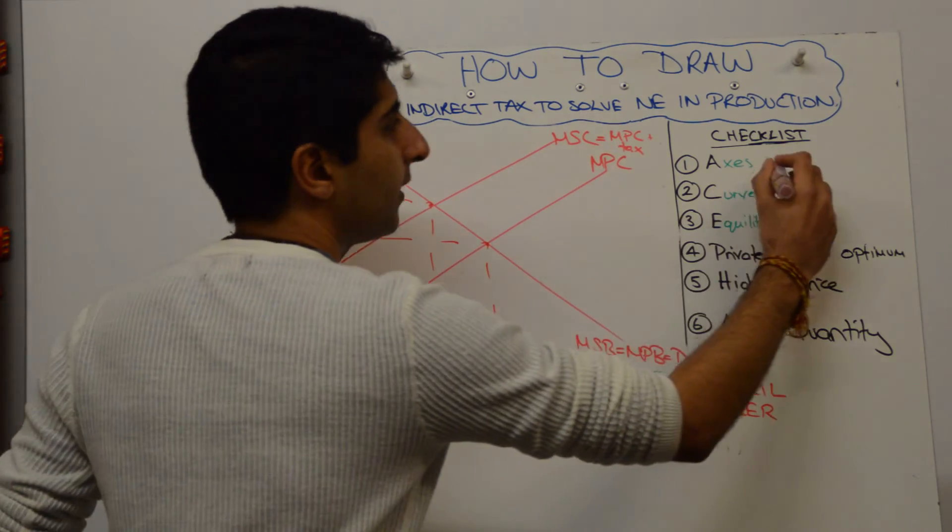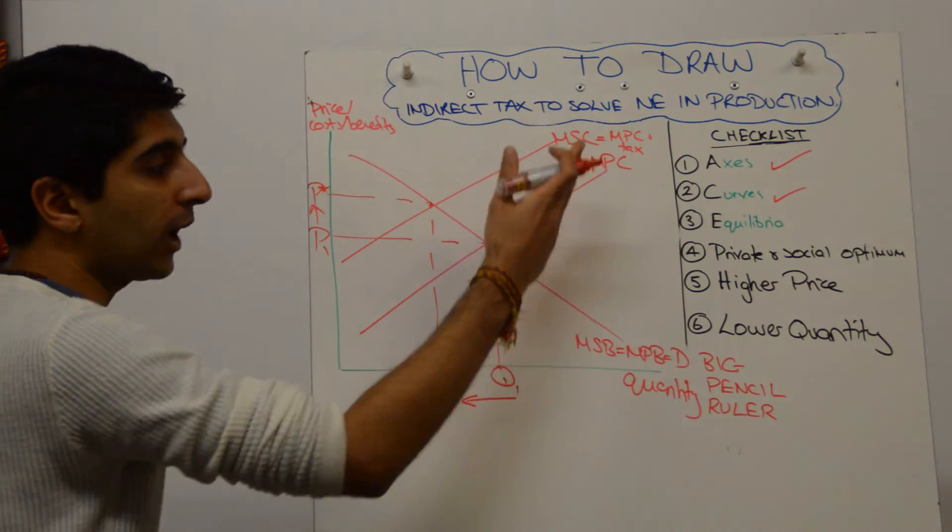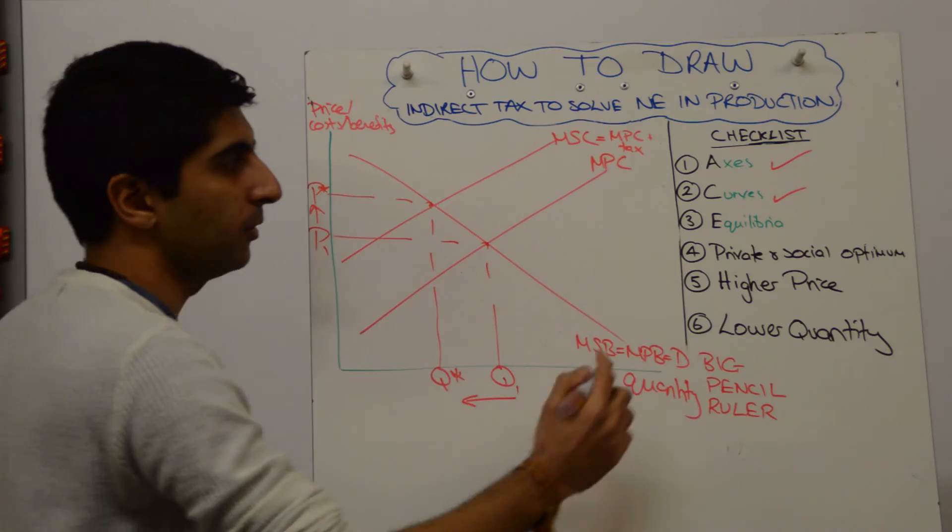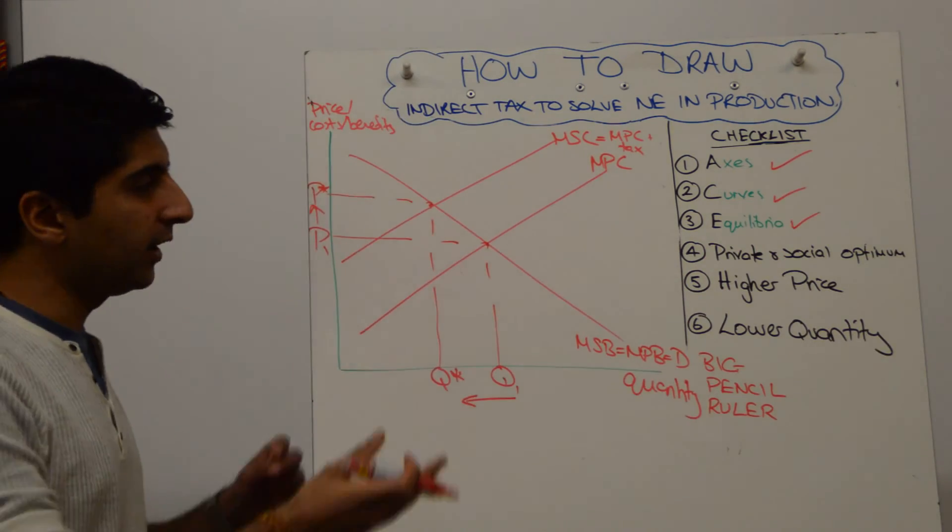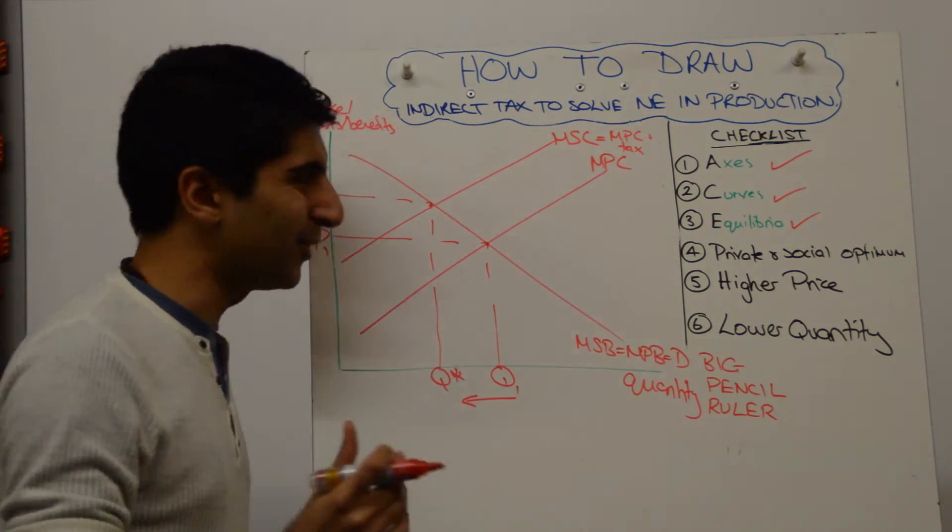Have we labeled our axes? Yes. Have we labeled our curves? Yes. And look how beautifully detailed they are labeled. Have we labeled our equilibria? Yes, we have. There is something on the axis here where there should be, lovely.